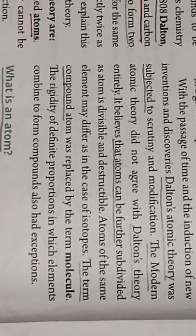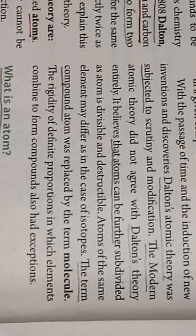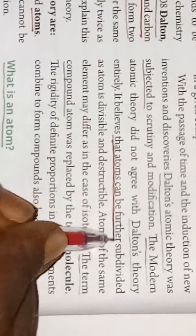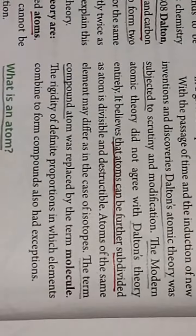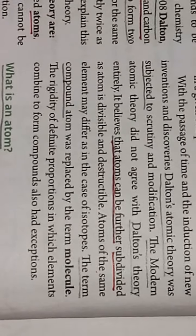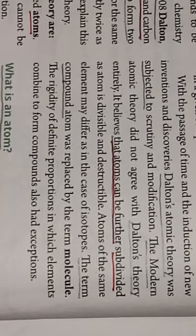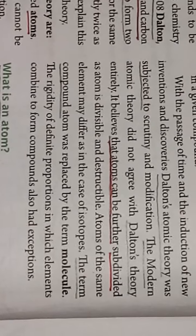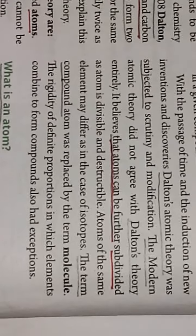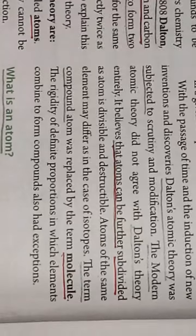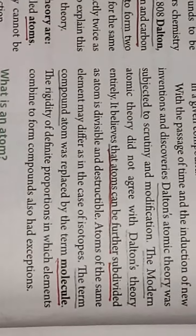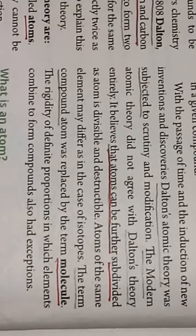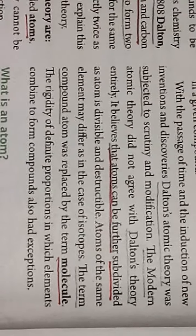The modern atomic theory did not agree with Dalton's theory entirely, because atoms can be further subdivided. It was discovered that the atom is divisible and destructible. Atoms of the same element may differ, as in the case of isotopes. The term 'compound atom' was replaced by the term 'molecule.' Like this, certain modifications were made by the modern atomic theory from Dalton's atomic theory, so it does not fully agree with Dalton's atomic theory.